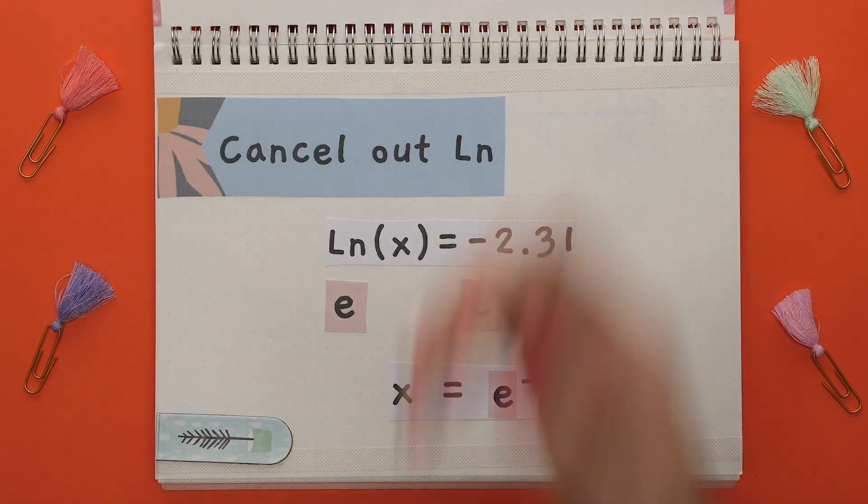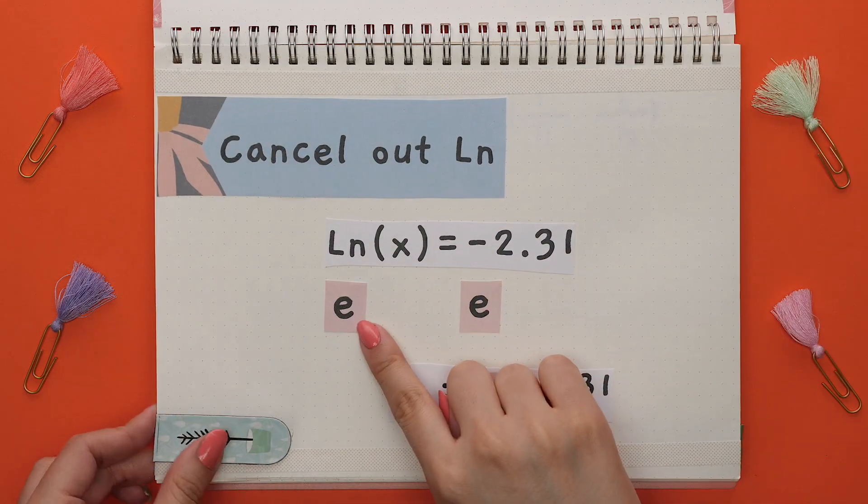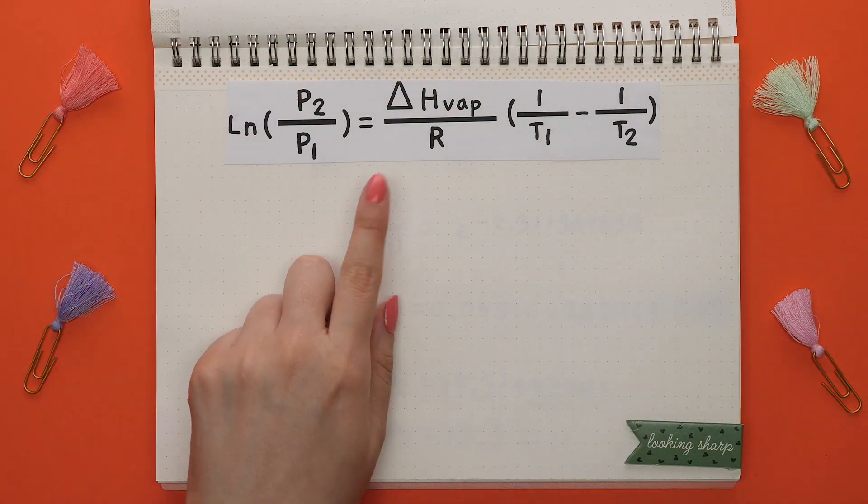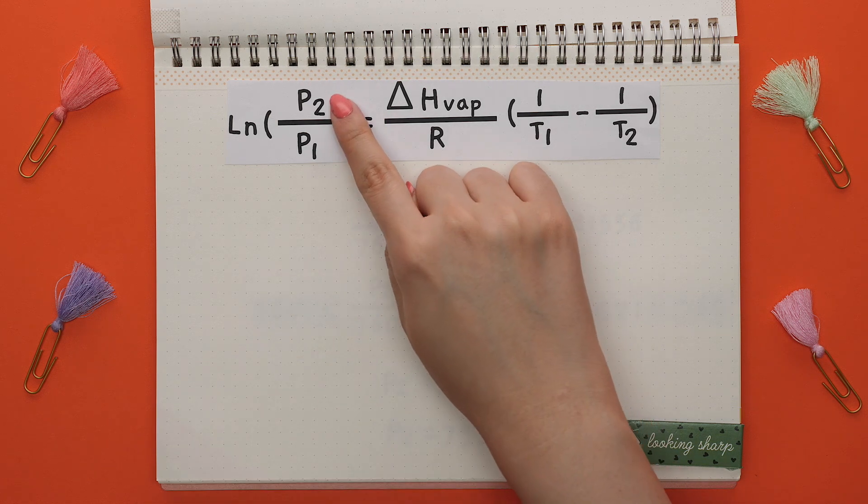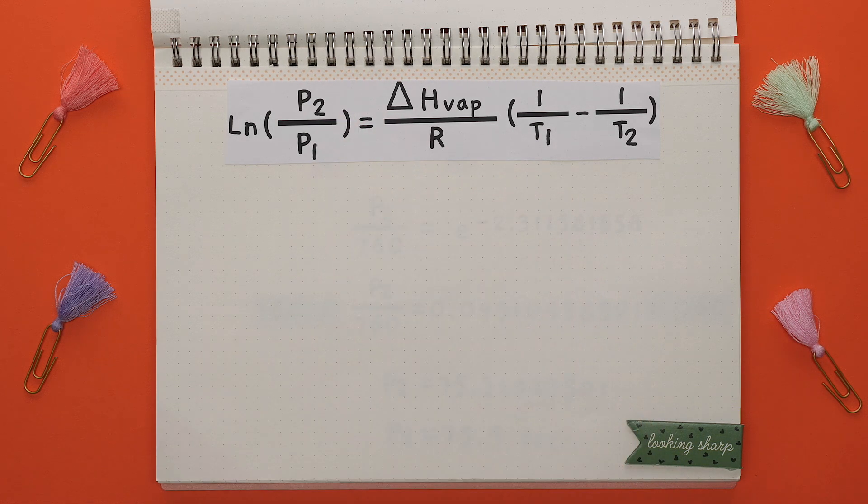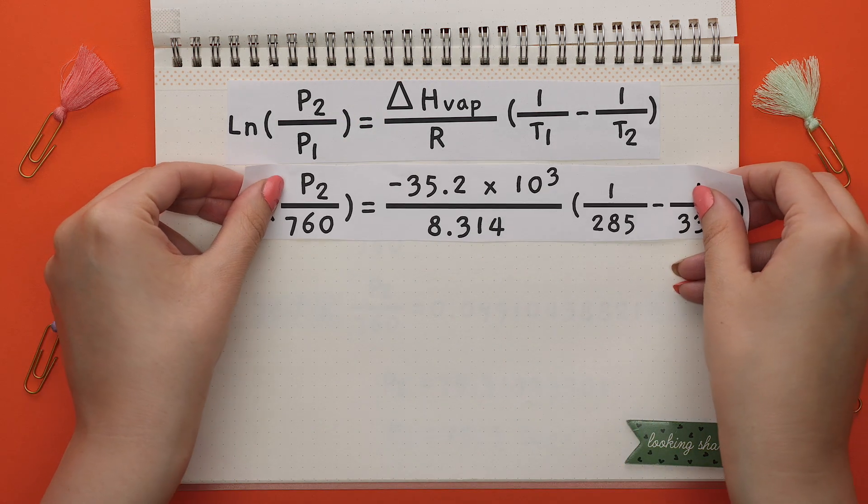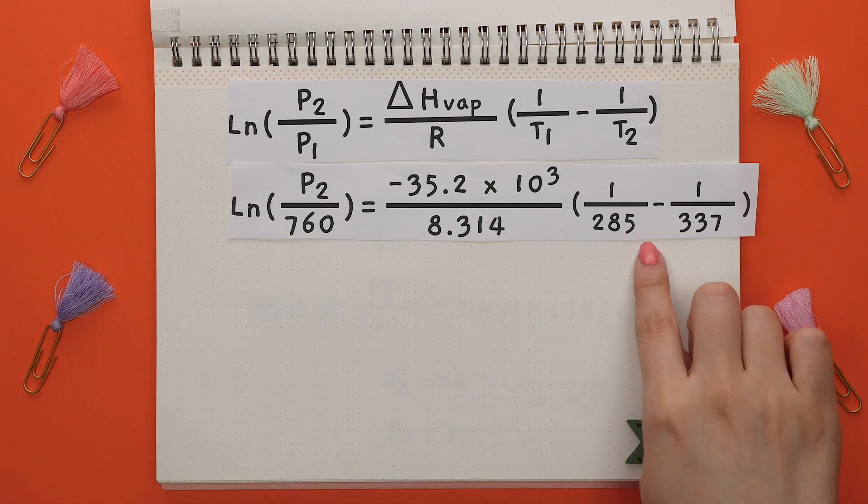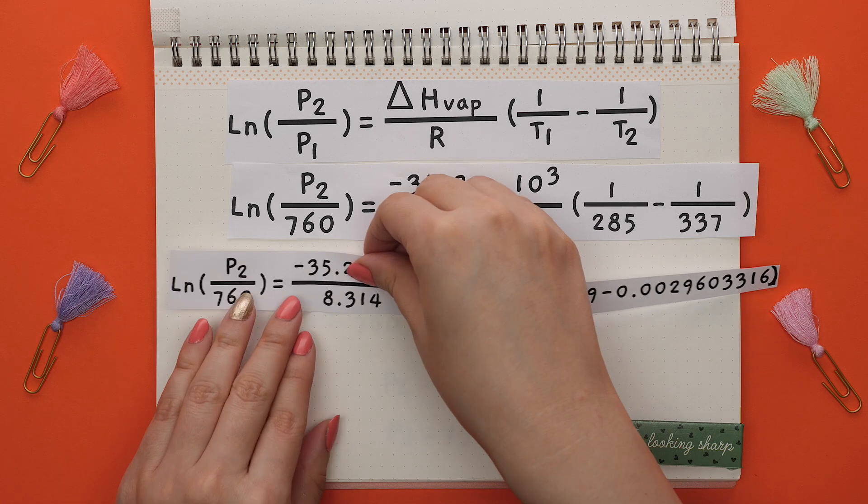To cancel out a natural log, we raise both sides of the equation by its base, which is E. We would use this when using this equation and we were asked to solve for one of these pressures. Let's review the math. All values are plugged in and we'll solve for P2. Start with the right side, calculate each fraction, then subtract.